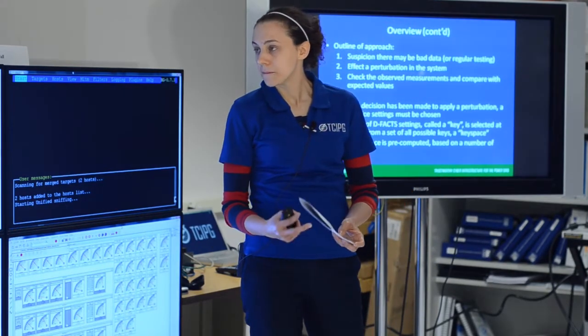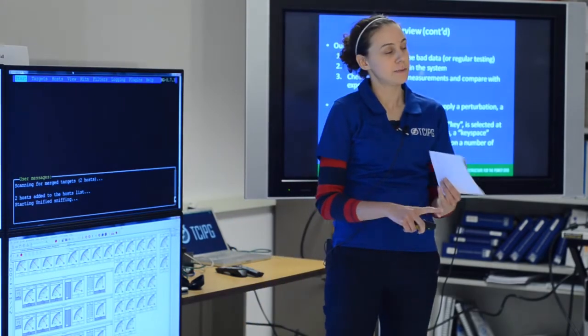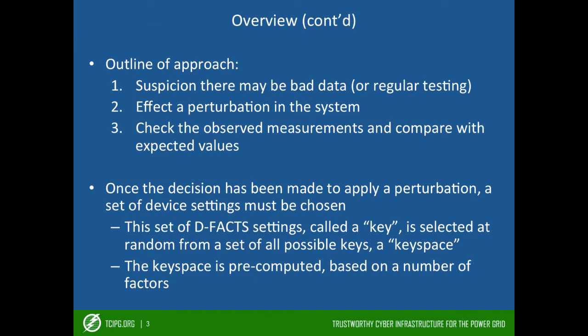The way this works is you start off with suspicion there might be bad data in the system or you've decided to do regular testing, and then you decide to make this perturbation in the system. Then you check the observed values during this perturbation and compare with what you expected the changes to be.